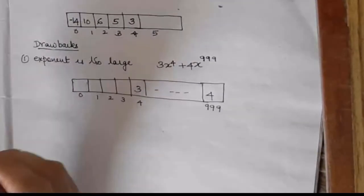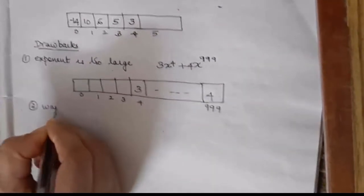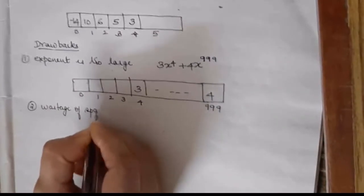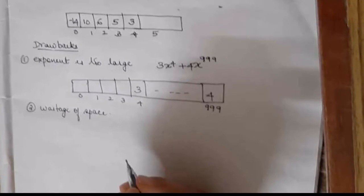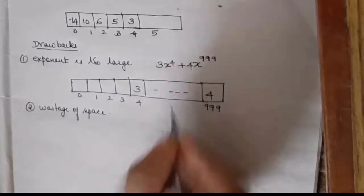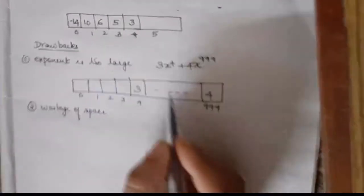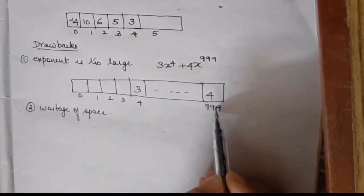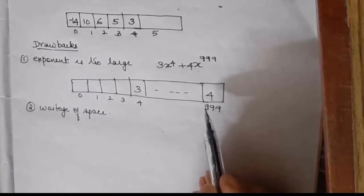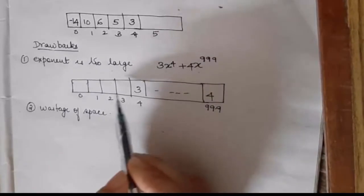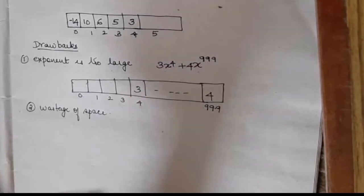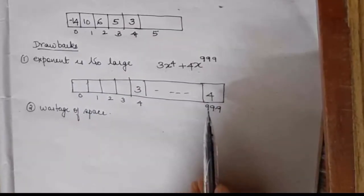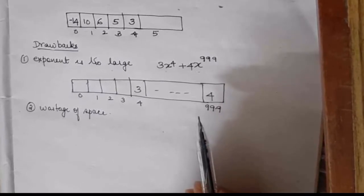The second drawback is wastage of space. For example, with the previous term having exponent 9.99, we would need about 999 memory spaces. For an integer at 2 bytes, that is 999 memory spaces, but except for 2 positions, the remaining 997 positions are vacant — wastage of space.